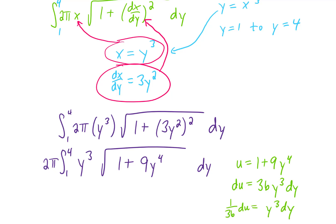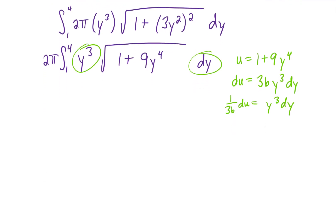y cubed dy can then be written as 1 over 36 du, and our integral will simplify as follows. Bringing the 1 over 36 outside and rewriting, and let's not forget that we have a definite integral here, so we need to look at the limits.